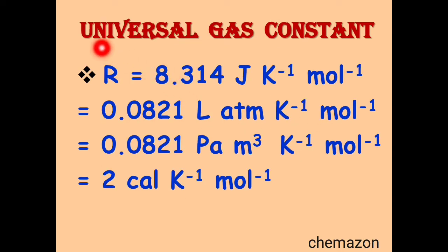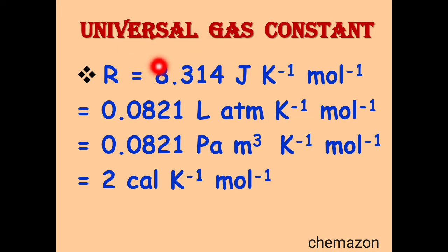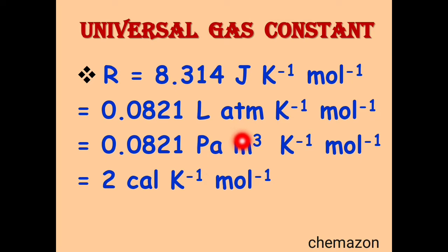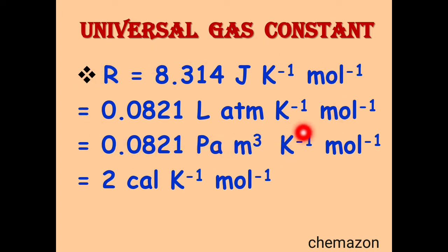Another very important unit is the universal gas constant R, which comes from the ideal gas equation PV = nRT. The units of R are PV divided by nT. In terms of Joule per Kelvin per mole it is 8.314, and it is also equal to 0.0821 litre atmosphere per Kelvin per mole. Litre can be written in meter cube and pressure in Pascal. In terms of calories it is 2 calories per Kelvin per mole. These 4 units of R will be very useful in all other chapters.